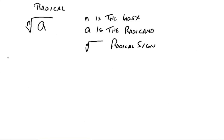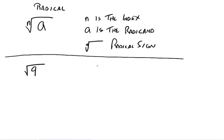You've probably seen things like the square root of 9. Notice that the index is missing — if we don't write a little number inside the wedge for the index, the index is understood to be 2 for square root. Otherwise we'll put a 3 in there for cube root, or a 5 for fifth root. So the square root of 9 is read as the square root of 9, and that equals 3.